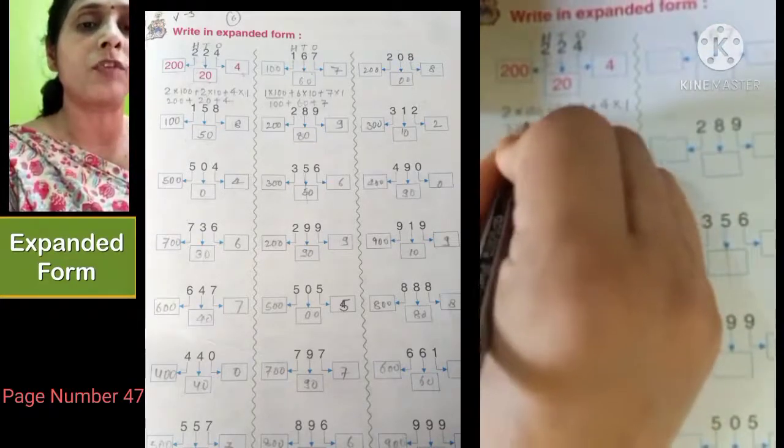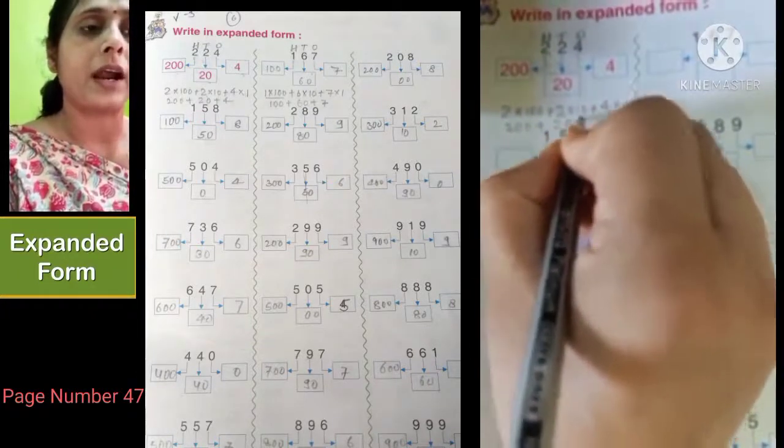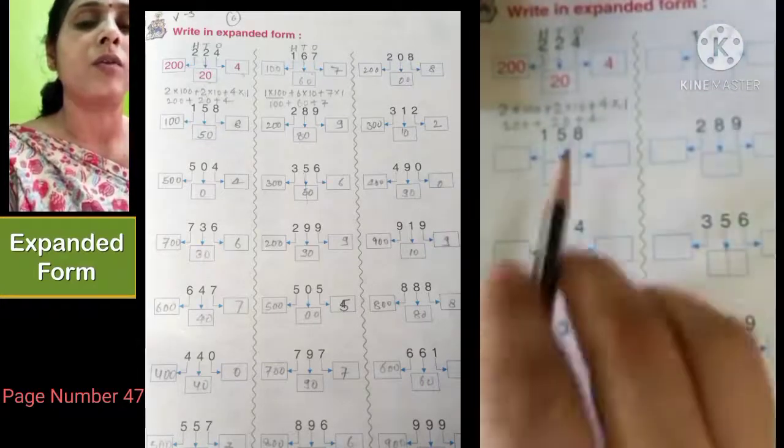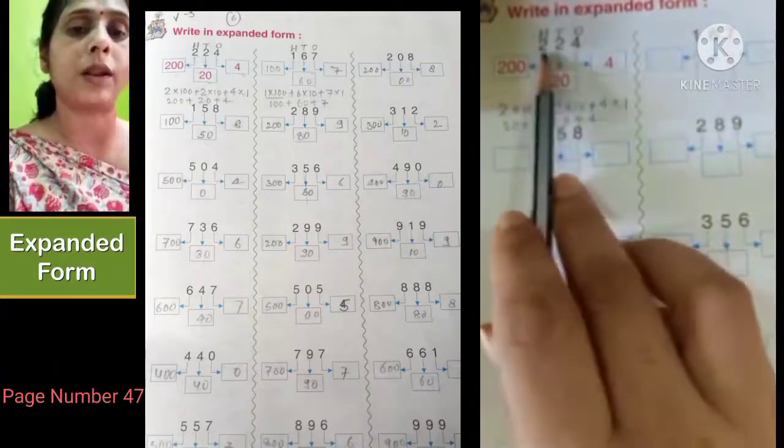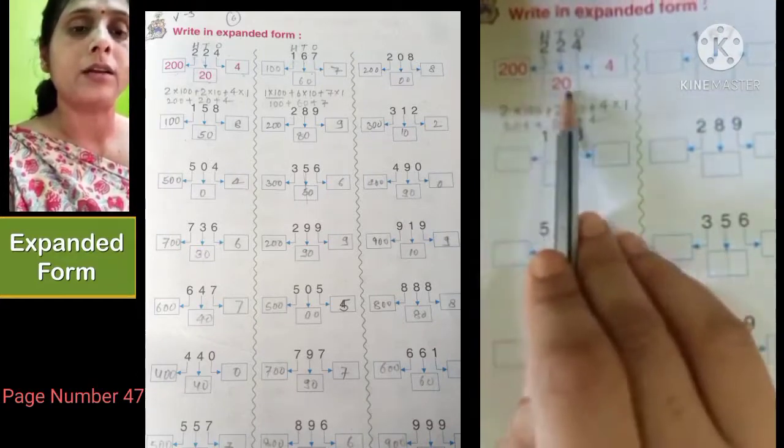2 multiply with 100 is equal to 200, plus 2 multiply with 10 equals 20, plus 4 multiply with 1 is equal to 4. So the expanded form of 224 is 200 plus 20 plus 4.